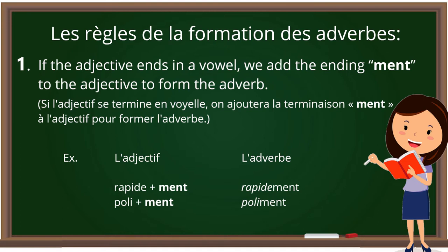Here comes the first rule. If the adjective ends in a vowel, we add the ending -ment to the adjective to form the adverb. For example, 'rapide' is an adjective ending in 'e' — a vowel — so we add -ment to make 'rapidement.' The next word is 'poli,' meaning polite, ending in 'i' — also a vowel — so we add -ment to make 'poliment.' When adjectives end in a vowel, we simply add -ment to change the adjective into an adverb.